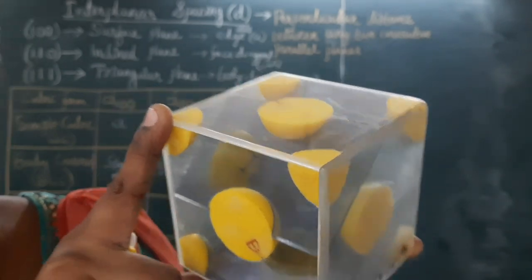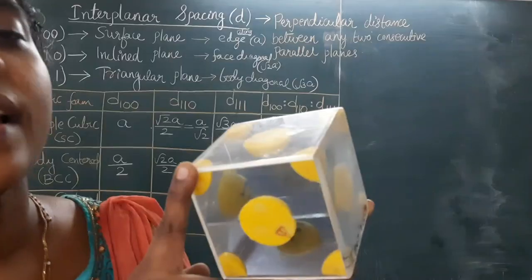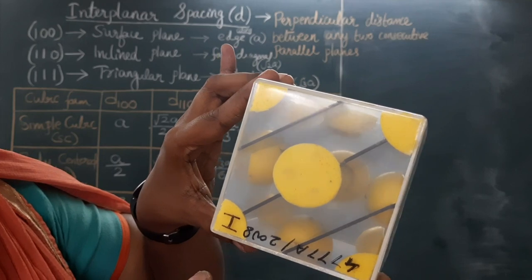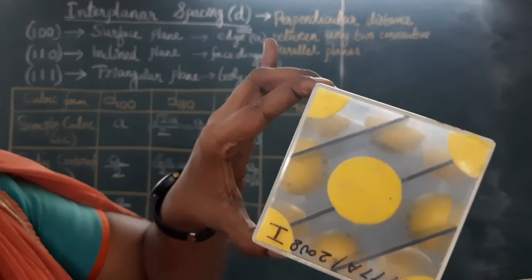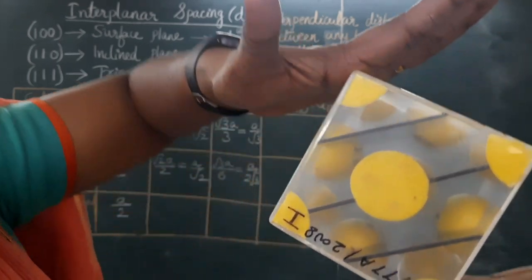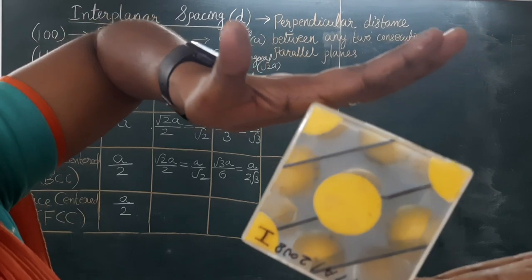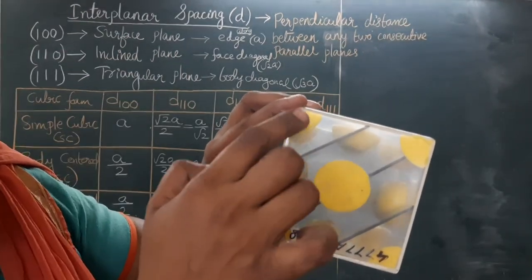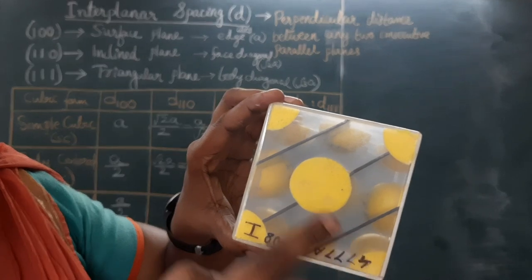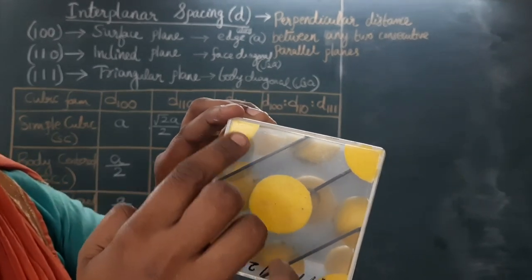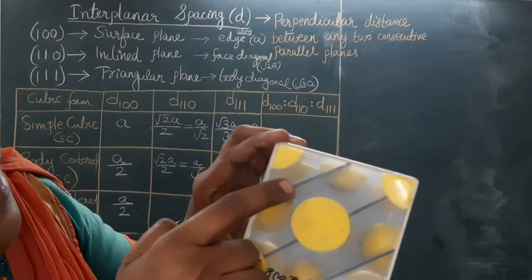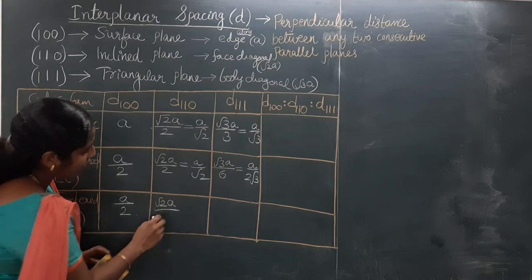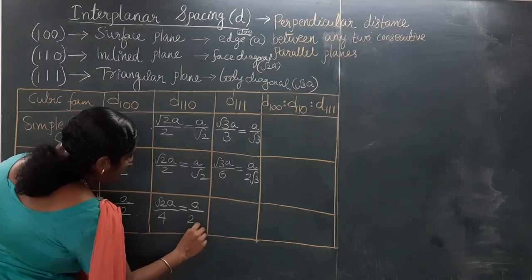See this structure in FCC — these are inclined planes corresponding to the 110 family. How many inclined planes inside this cube? We can see 1, 2, 3 inside, plus one more parallel plane at the bottom and one at the top — total five parallel 110 planes, meaning four perpendicular distances along the face diagonal. So D(110) for FCC = root 2 · A divided by 4, which equals A by 2 root 2.